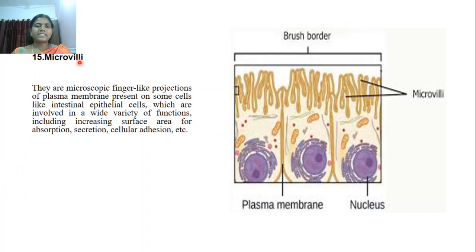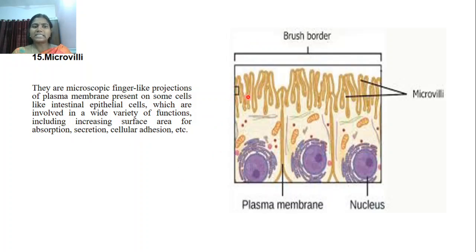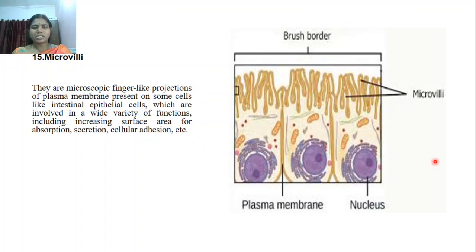In intestinal cells, the plasma membrane is extended to form finger-like projections, mainly to increase the surface area. The intestinal epithelial cells are involved in a wide variety of functions like increasing absorption, increasing the surface area for absorption, secretion, and cellular adhesion. These extended projections are also functions of the plasma membrane.